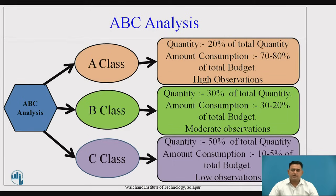B Class: the overall quantity is only 30% of the total quantity, and the amount consumed is 20% to 30% of the overall total budget. As it consumes only 20% to 30% as compared to A Class material, there is a moderate observation for the B Class material.